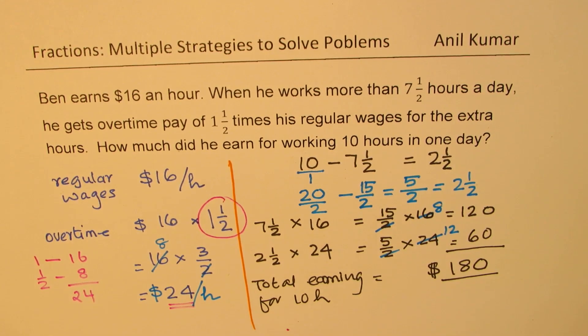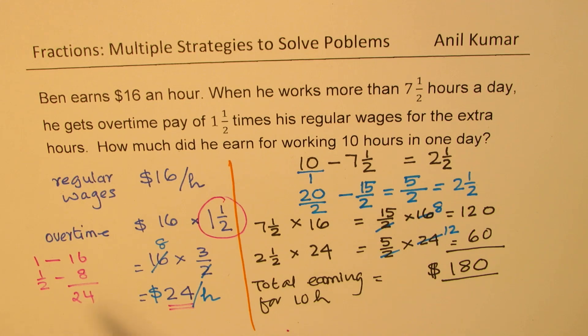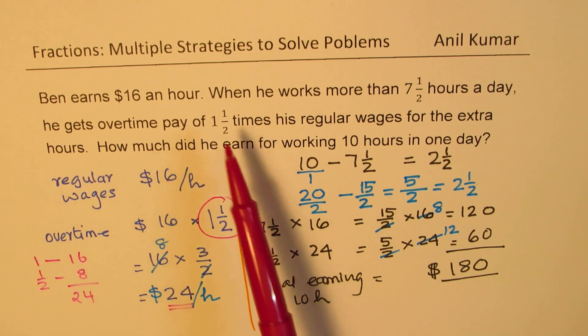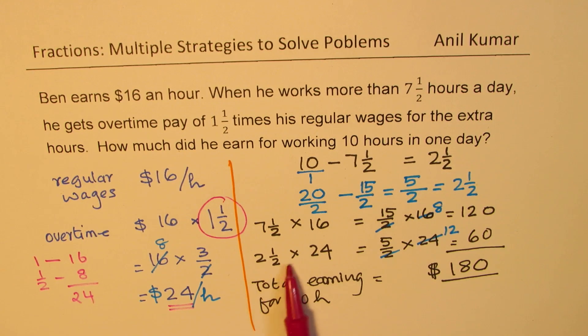So that is 24. 1 and a half times. Perfect. So half times is $8, which you get extra for the extra time, which was 2 and a half hours.